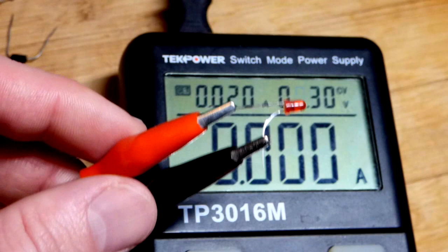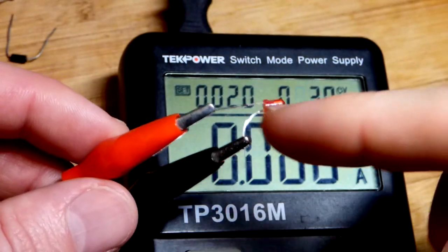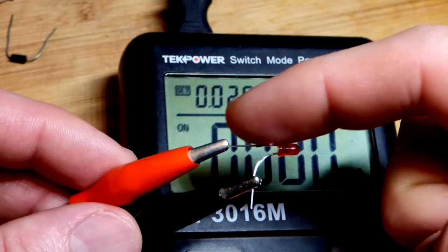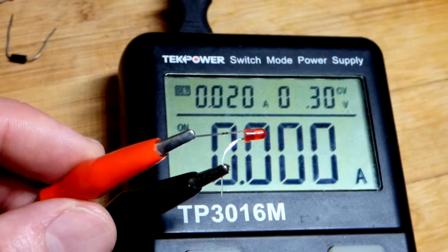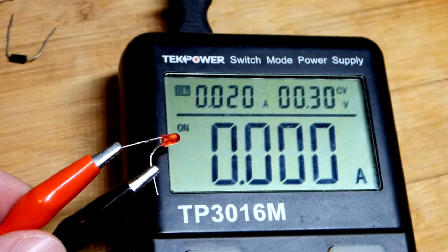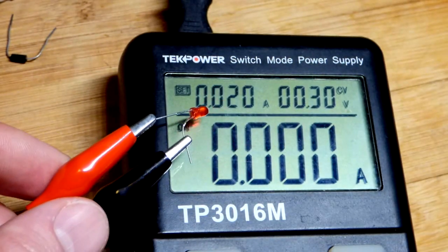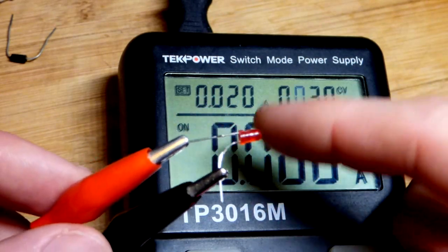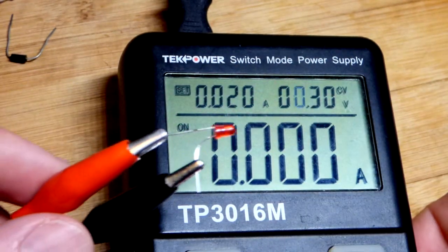So now we come to the power supply there. I have the negative side of the power supply clipped to the shorter lead, the cathode. The positive side of the power supply clipped to the longer lead, the anode of the LED. Power supply voltage is as low as it can go. Output is on right now. And we have current limited to 0.02 amps which is the same as 20 milliamps, the most current that you should put through these.